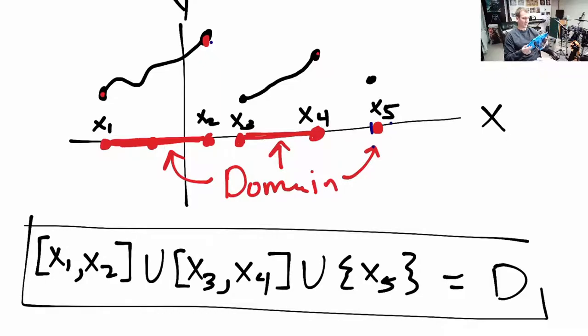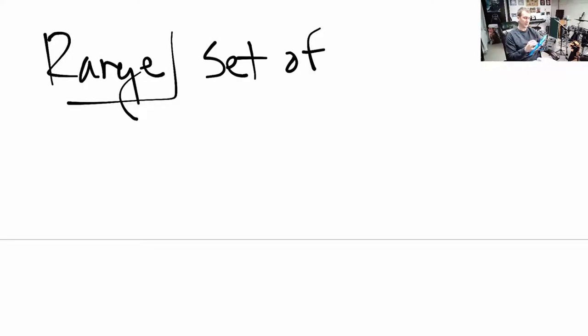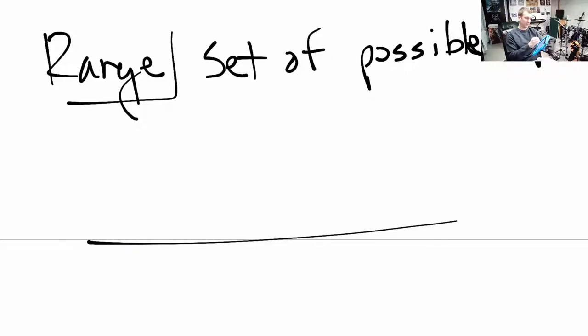Another thing we can learn from the graphs of functions is the range. The range of a function is the set of possible outputs. The graph I had before would have worked fine, but I'll give you a cleaner one. This one is going to start down here, come up, come down, go back up again, and then eventually drop down to an endpoint.